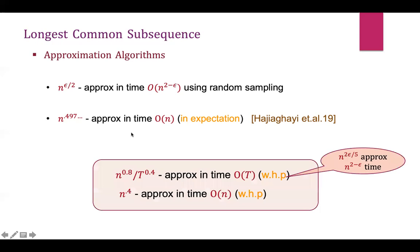In our work, we further improve this approximation guarantee and generalize beyond linear time. One drawback of the prior result is that it works only in expectation, so we ensure all our algorithms work with high probability. Formally, in time order t our algorithm provides n to the power 0.8 over t to the power 0.4 approximation, or equivalently in time n to the power 2 minus epsilon, it gives n to the power 2 epsilon over 5 approximation. In linear time, this gives n to the power 0.4 approximation.